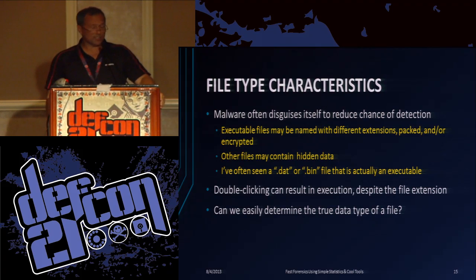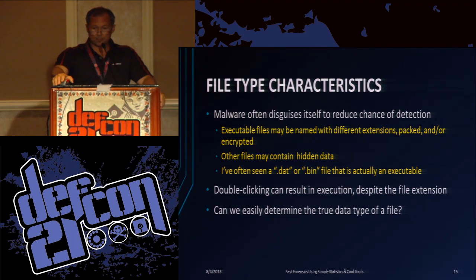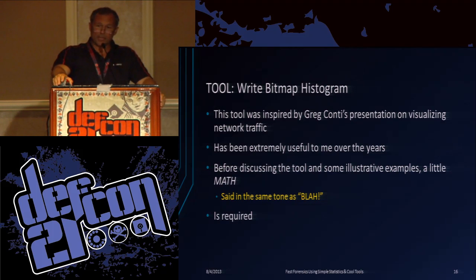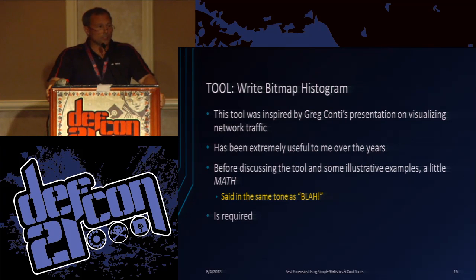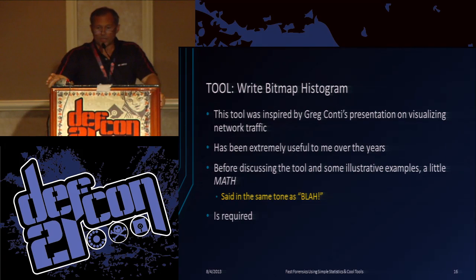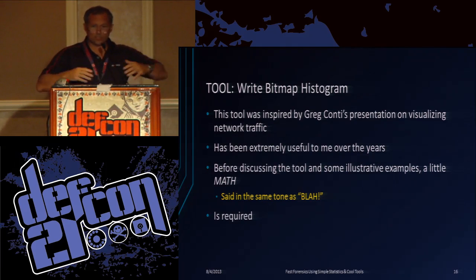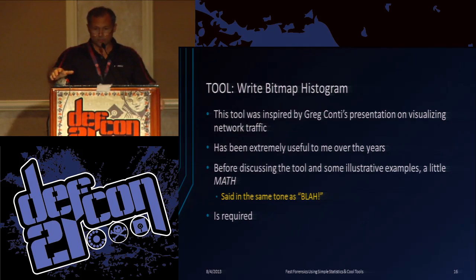File type characteristics: malware often disguises itself. It may pack stuff in executables that are encrypted, and this can help detect that. The right bitmap histogram tool will create a bitmap image — that was the bitmap image of solitaire, which one person recognized as an executable. The chart on the right was a histogram, typical for an executable. Before discussing the tools you have to do a little bit of math. There are a lot of slides in this presentation, so once we get through the math, it will be easy for you to figure out the tools on your own.